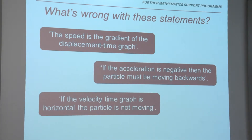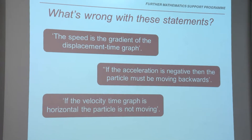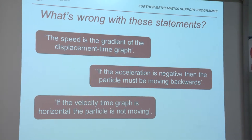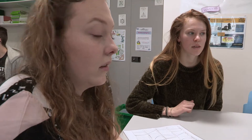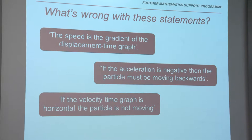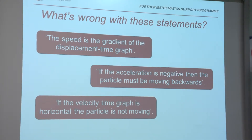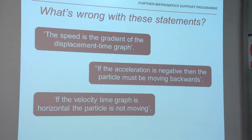Have a read of these. What's wrong with them? Discuss it with the person next to you for a minute or so and then we'll discuss them together. If the velocity-time graph is horizontal, then the particle's not moving. That means it's moving, but it's just not accelerating. If the acceleration is negative, then the particle must be moving backwards. No — it's deceleration, which could be any direction. It could be still moving forwards, just slowing down.